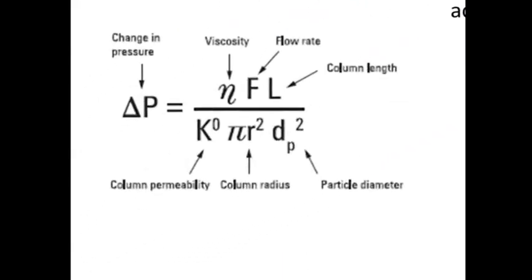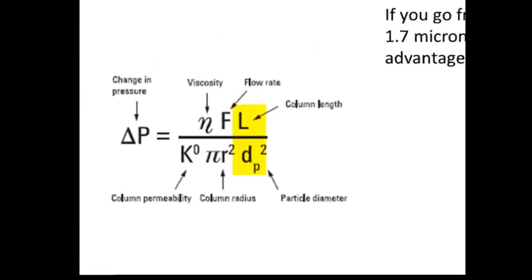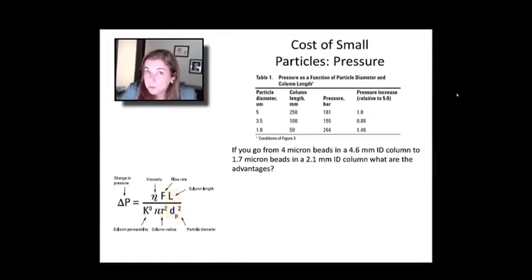This equation down here to the left, I won't derive it for you. But it basically explains how the pressure drop across the column is a function of the column length and the particle diameter. Linearly, if you make the column twice as long, you have to need twice as much pressure to get everything across it. So that's typical, may be expected.